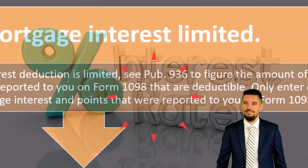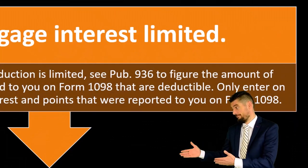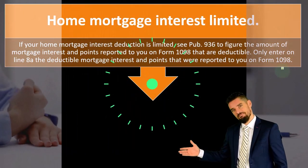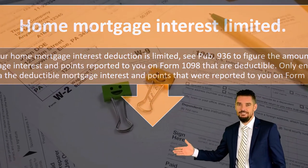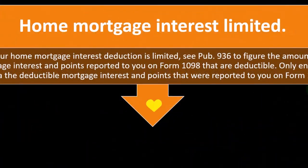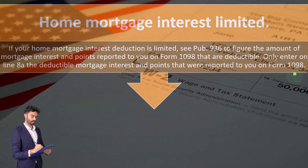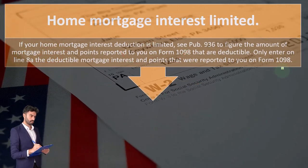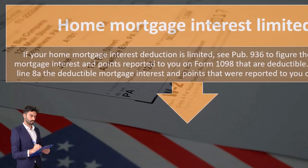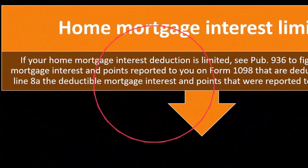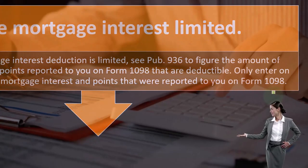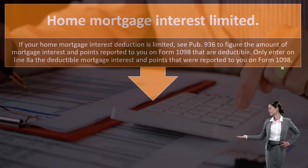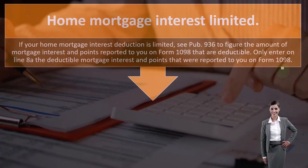Only enter on Line 8A the deductible mortgage interest and points reported to you on Form 1098. Remember, the IRS will have that Form 1098 just like they have 1099s and W-2s. The 1098 reports something that possibly could be deductible to you. You would expect the IRS wants you to report the amount on the 1098 or something lower. If you report something higher than what's on the 1098, you're claiming a deduction beyond what the form supports — that's when the IRS would be more likely to question that position.